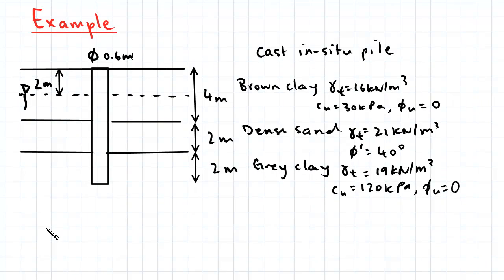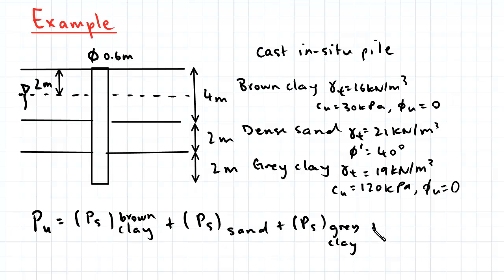The equation for the ultimate axial capacity of a pile can be written like so. PU is equal to PS of brown clay plus PS of sand plus PS of gray clay plus PB of gray clay.